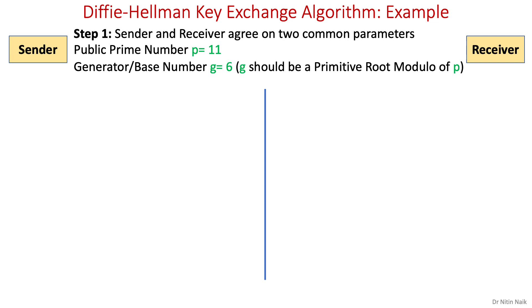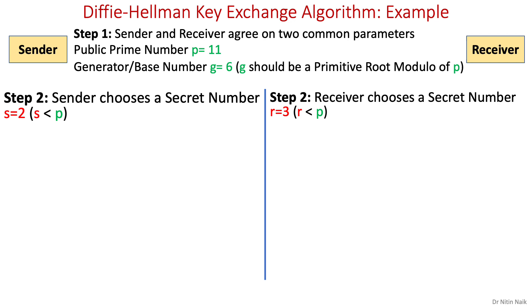However, for the sake of simplicity, we will use this smaller value here, but it would be insecure if it is used with the small numbers in practice. In step two, sender chooses a secret number s equals 2 and receiver chooses a secret number r equals 3. Both must be smaller than public prime number p, which is 11 here, so that is true.